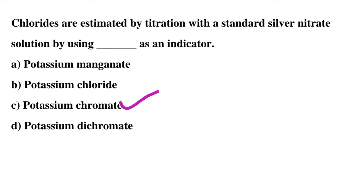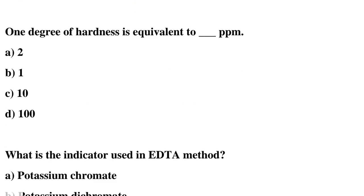Next question: one degree of hardness is equivalent to — ppm. Option A: 2, option B: 1, option C: 10, option D: 100. The correct answer is option B: 1.